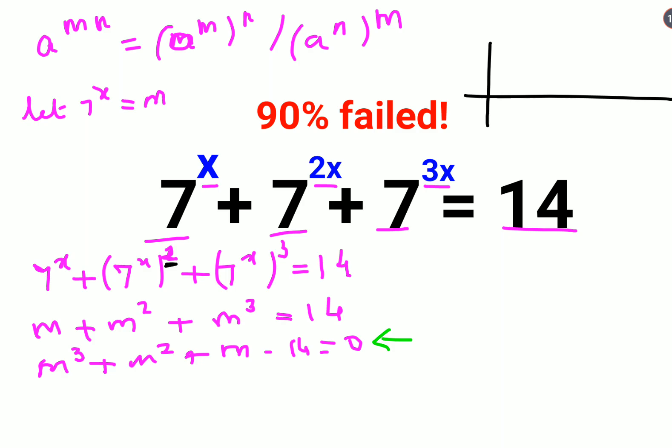So we will take the value of m as 1. When I take the value of m as 1 I get 1 plus 1 plus 1 minus 14 that doesn't give you a 0. So this is gone wrong.